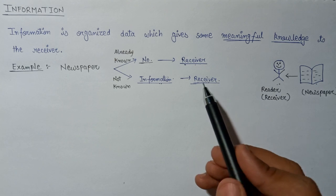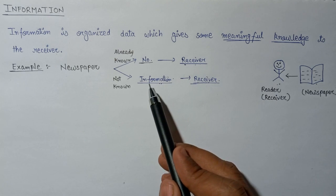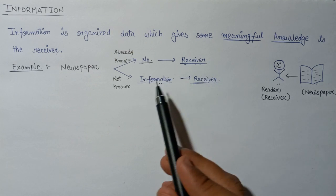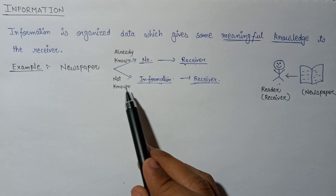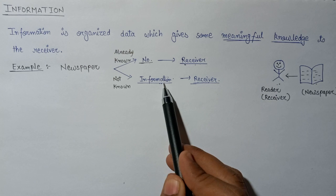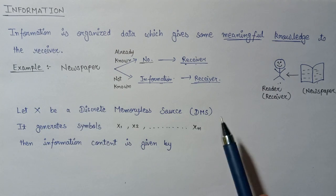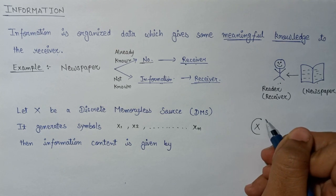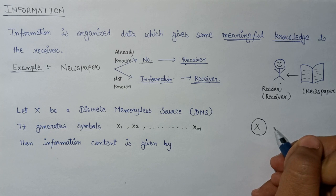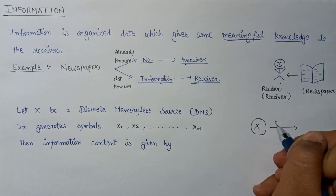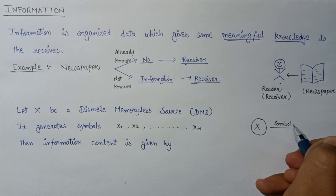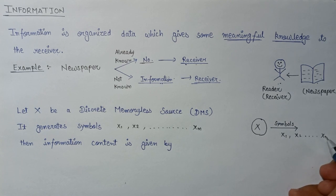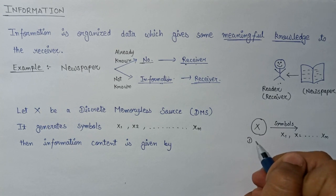This is the basic difference between data and information: if it is already known by the receiver, that data will not act as information, but if that data is not known, it will be a part of information. Now, let x be a discrete memoryless source that generates symbols x1, x2, through xn.